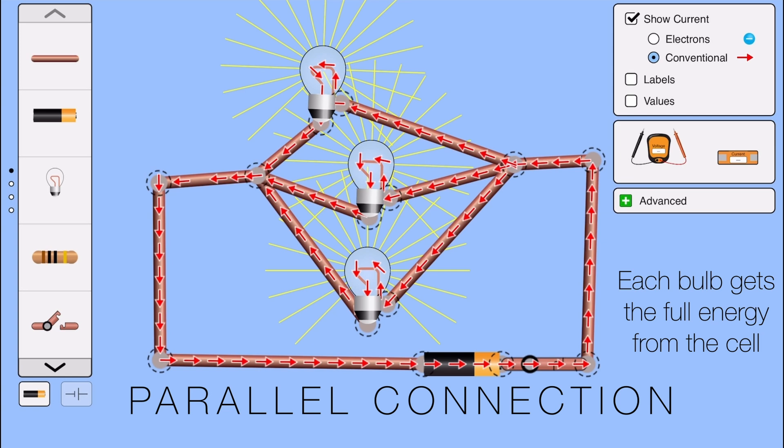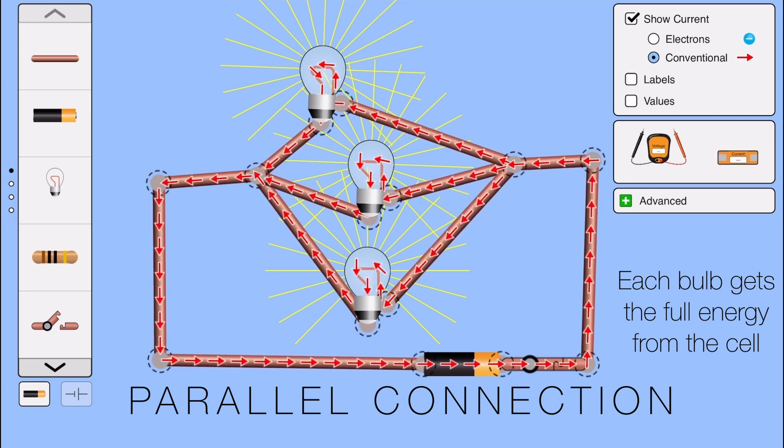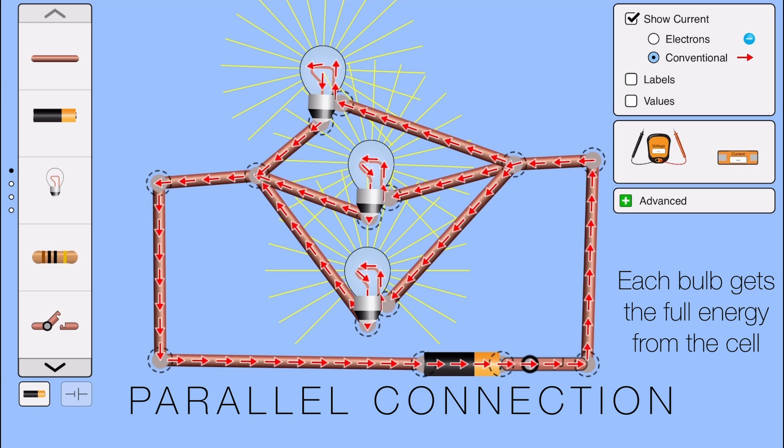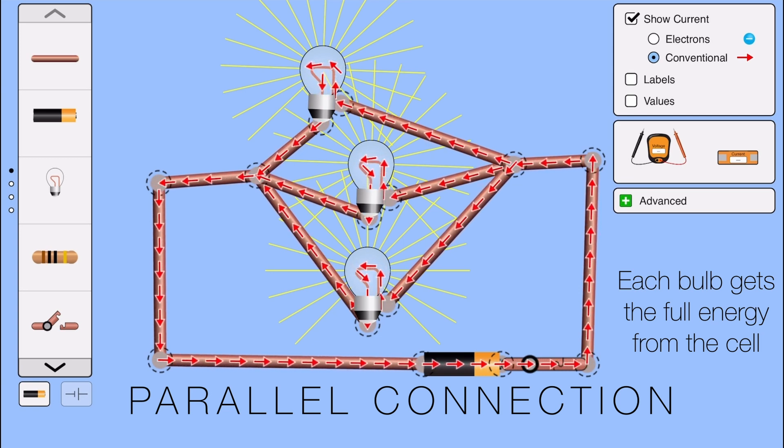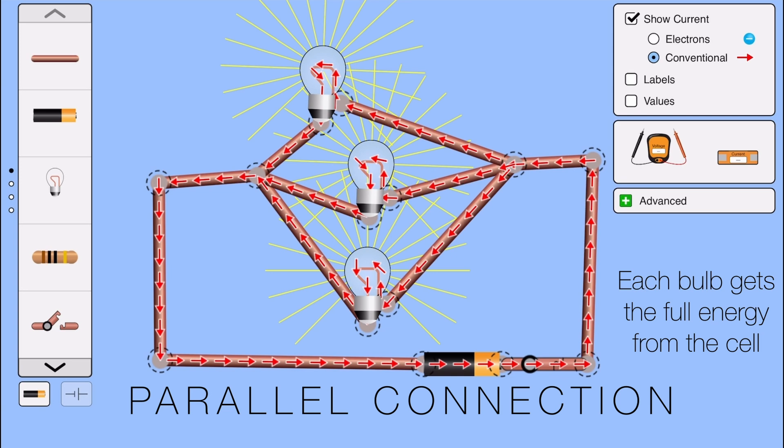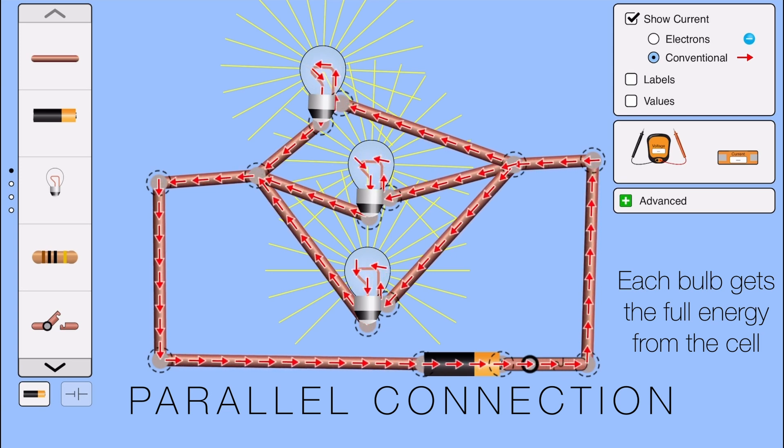If you look closely at the wires, you'll see that each bulb is directly connected to the battery. And in series connection, current had to pass through the others to get to each bulb. But here it's like every bulb has its own private line to the battery. No sharing, no waiting, just direct access.